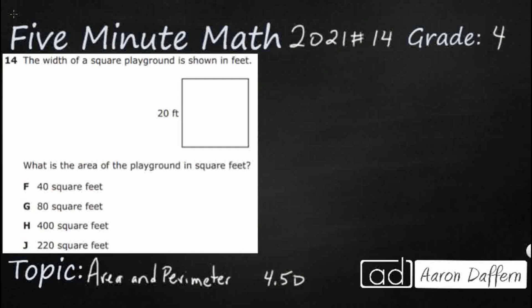So we have a square and all they're going to do is give us the width here of 20 feet. But it is a square. Not only does it look like a square, but they actually give us that term and that's going to let us know that even though they've only given us the width, we know that all four sides of a square are equal. And so if we really wanted to, we can just go ahead and put our 20 feet all the way around.